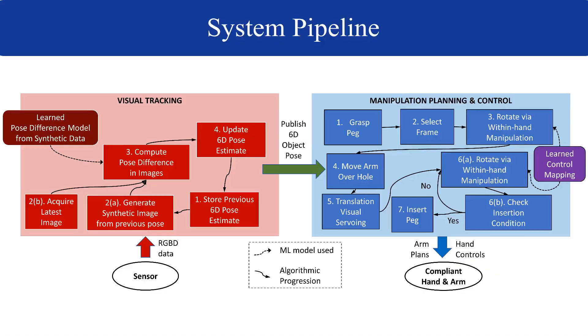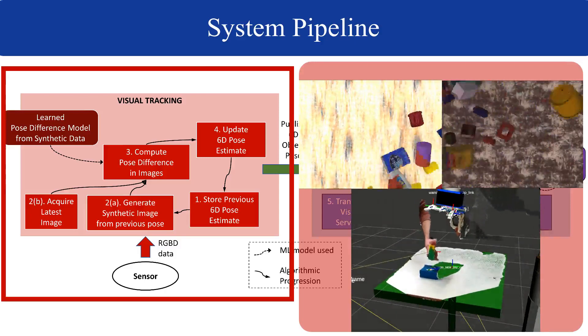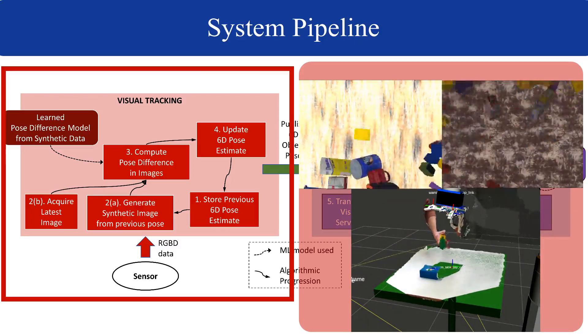We develop a system architecture that closes the control loop through vision, specifically by training a 6D object pose tracker solely from synthetic data that is both high-fidelity and physics-aware.